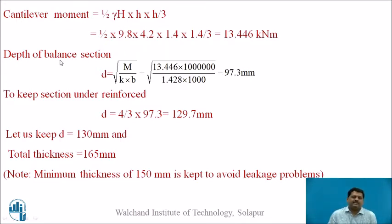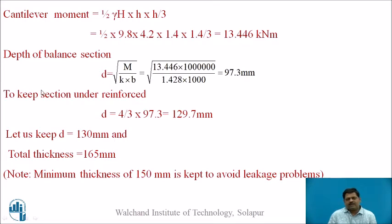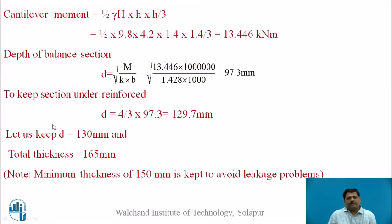The section is designed for this moment using a balanced section approach: d = √(M / (K × b)), where the breadth b = 1 m strip, giving d = 97.3 mm. Since RCC sections are kept under-reinforced for ductility, d is adjusted to 129.7 mm (based on D/3 factor with wall height 4 m). The effective depth is taken as 130 mm and total thickness as 165 mm. The minimum wall thickness for water tanks is 150 mm to avoid leakage.